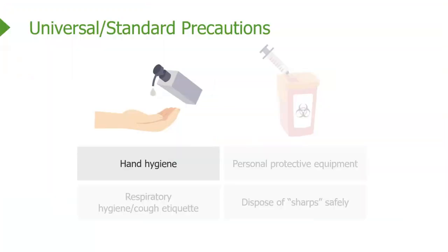Universal standard precautions are the basic level precautions that are the minimum standard for all patients. The goal is to reduce the risk of transmission of microorganisms while providing care for patients. There are four main parts. Hand hygiene is definitely something everyone is stressing — the value and importance of stopping the transmission of microorganisms. That's number one, and it's part of every one of the three transmission precautions.